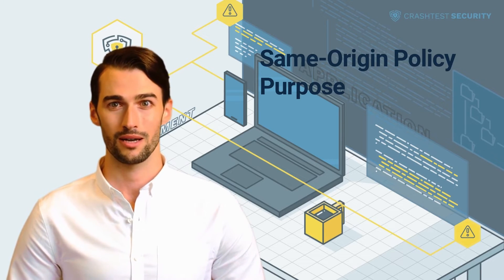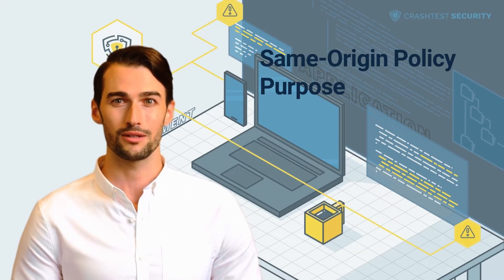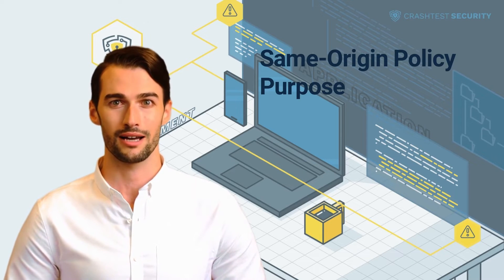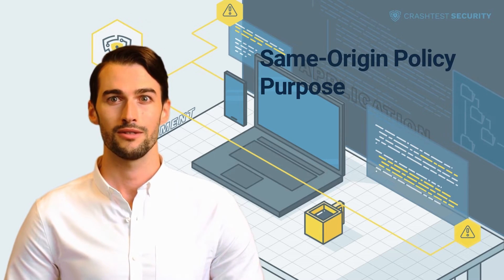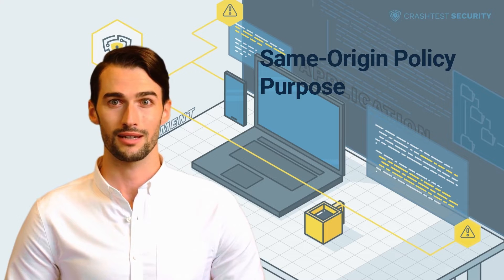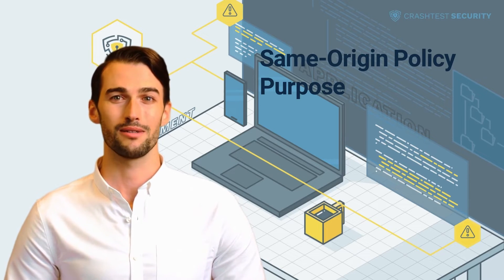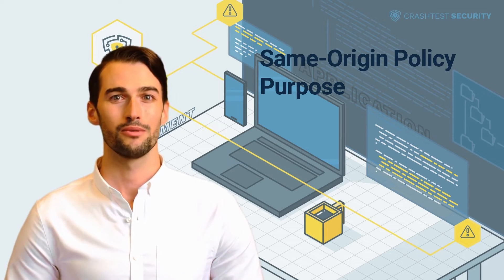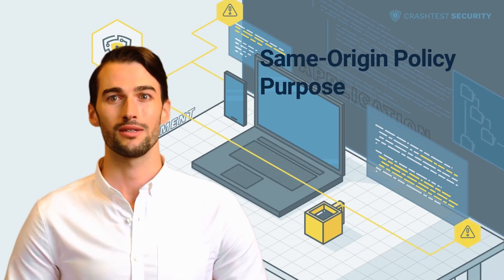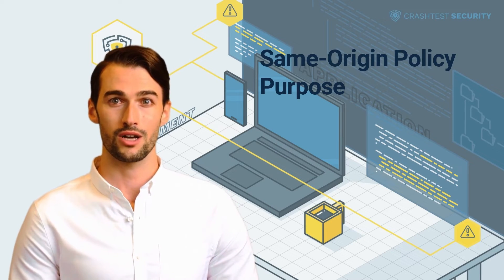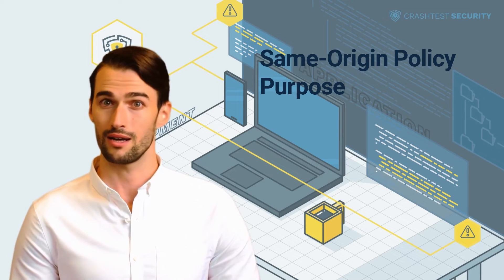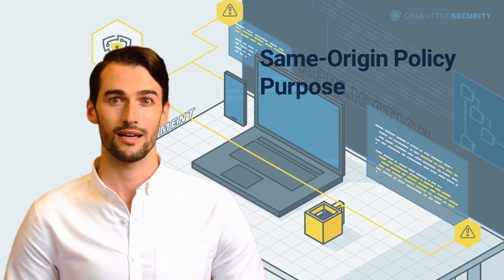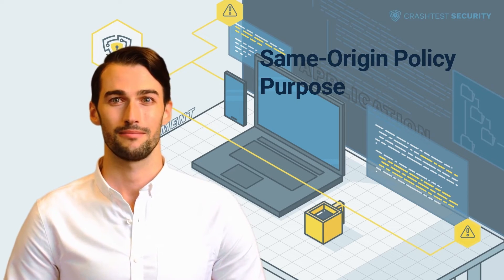This part of the SOP can sometimes be a source of security vulnerabilities and lead to clickjacking attacks. There are differences in how the policy and same origin checks are implemented between browsers. The SOP application varies between technologies and resources such as cookies, JavaScript, DOM, and other APIs. That said, here are a few examples of what SOP will typically forbid.